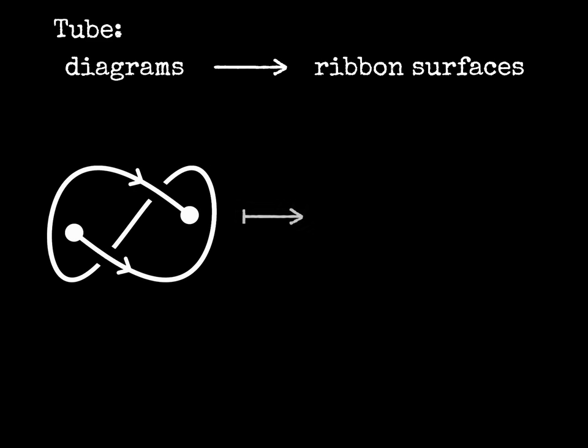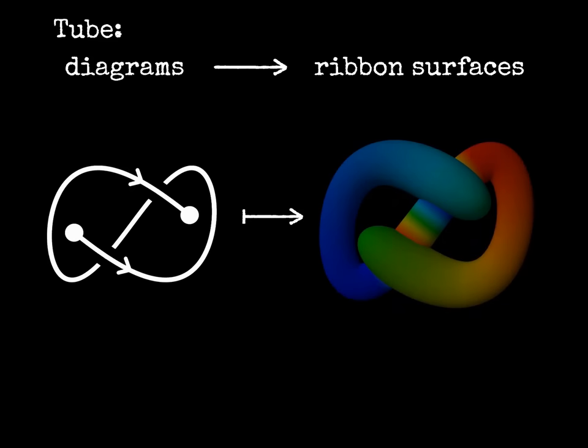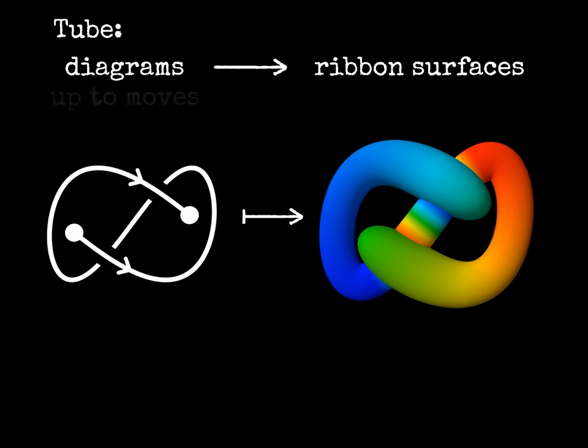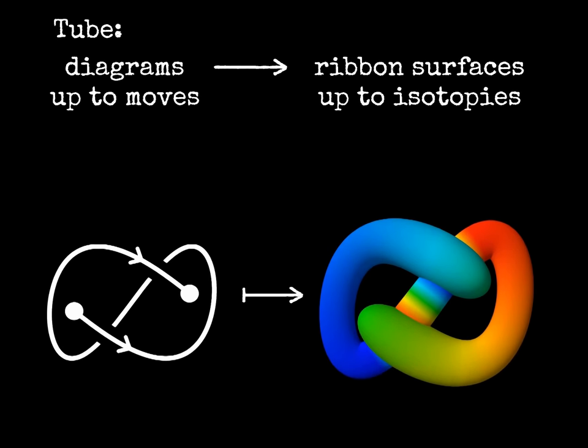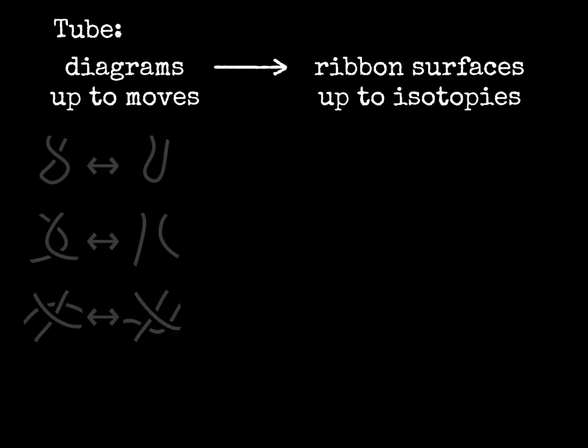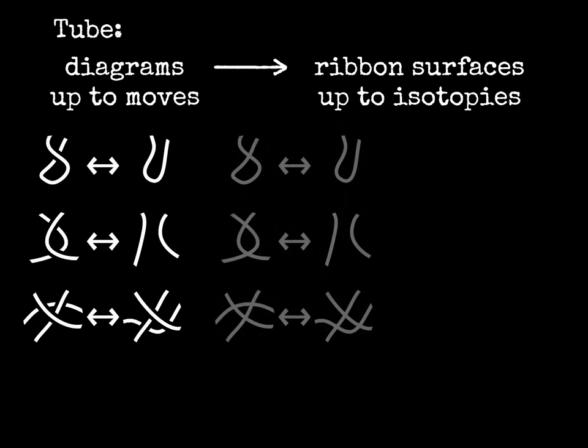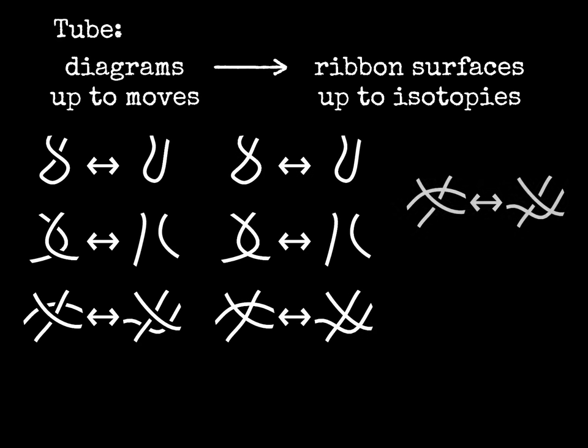The tube function is interesting because there are some moves on diagrams that translate into isotopies of ribbon surfaces, movements that do not change the type of knotting. The moves are the Reidemeister moves, the virtual Reidemeister moves, which look the same but involve virtual crossings, and a few more. Two of them are similar to Reidemeister move 3, and the last two moves involve endpoints.